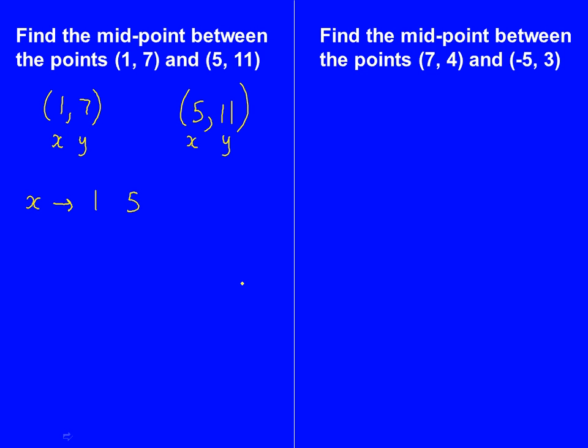To work out the middle of 1 and 5, we just add them up and divide it by 2. So when you add them up, you get 6, divide it by 2, you'll get 3.